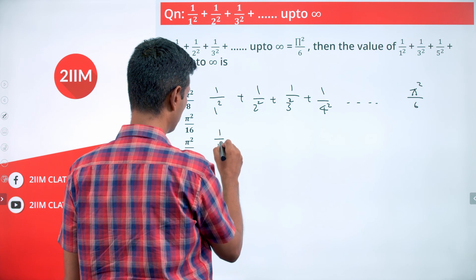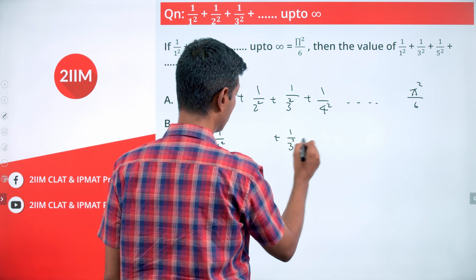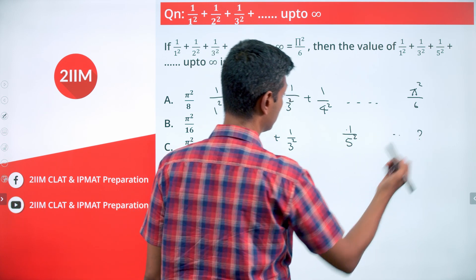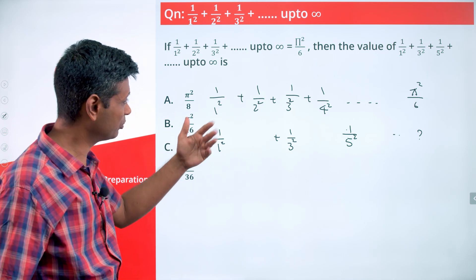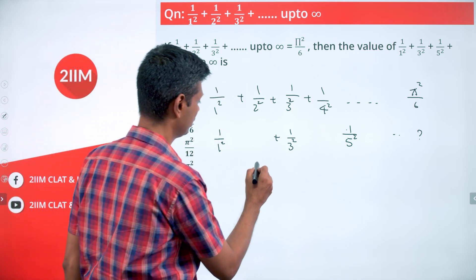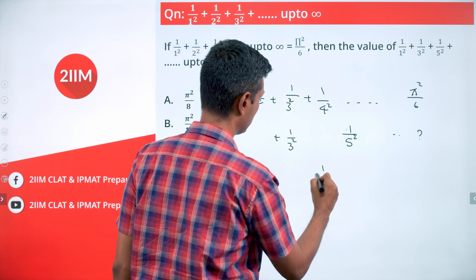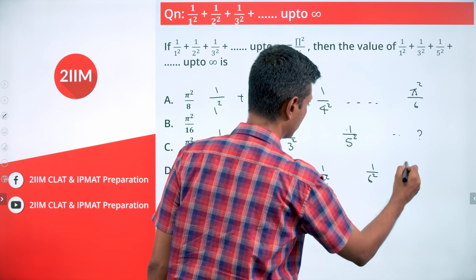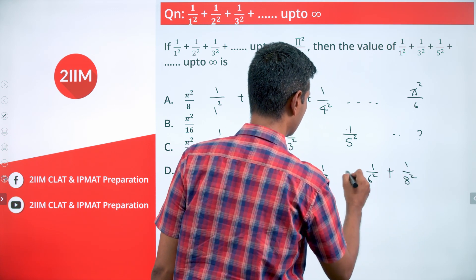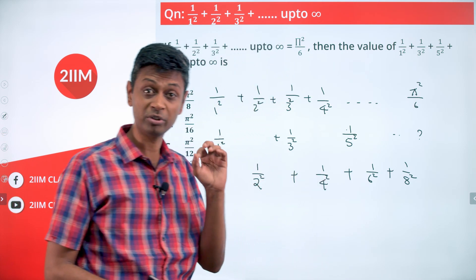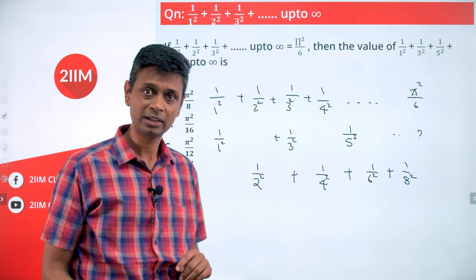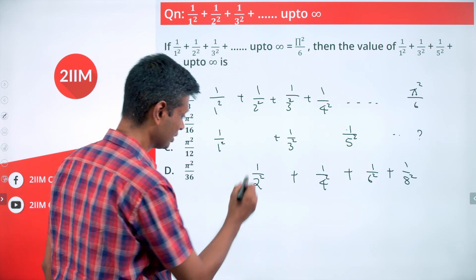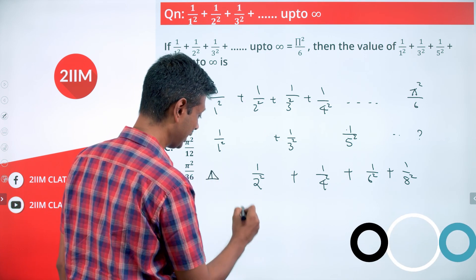The interesting part is: 1/1² + 1/3² + 1/5² all the way — what is this equal to? Think about it. What is missing from the full sum? What is missing is 1/2² + 1/4² + 1/6² + 1/8² and so on — these are all the even terms. From this missing part, since all terms are even, I can factor out 1/2².